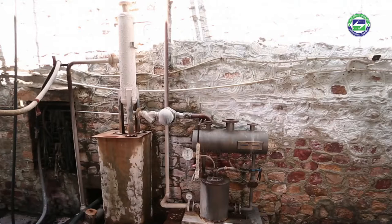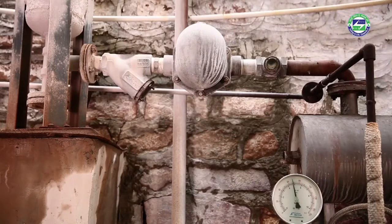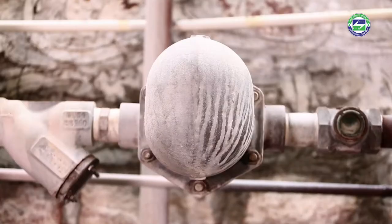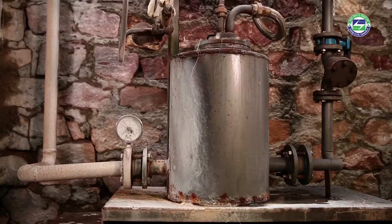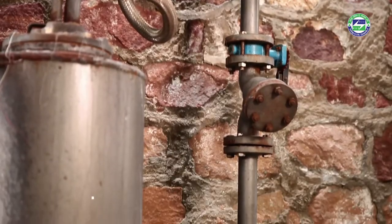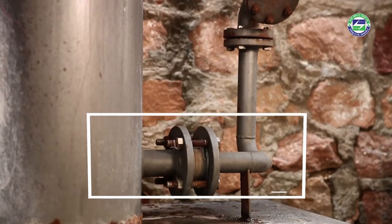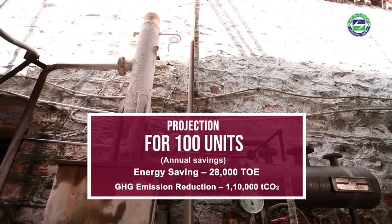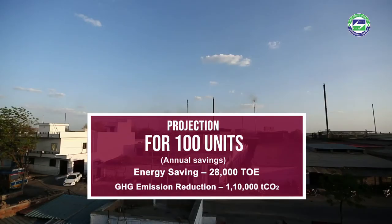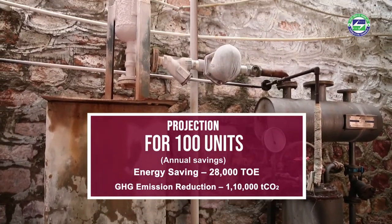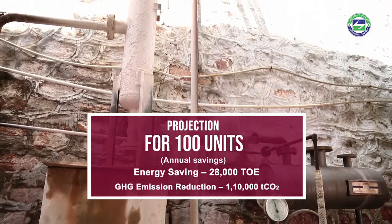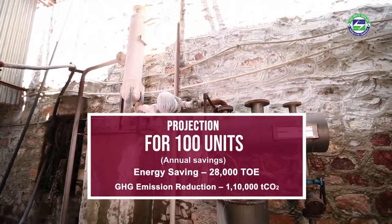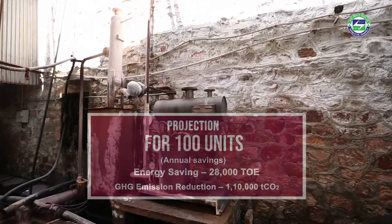The installation requires an investment of rupees fourteen to sixteen lakhs, which can be recovered within one year. The performance of the system depends on the performance of the steam traps, which should be able to trap live steam and separate steam from condensate. The system can be implemented in all process industries using steam for indirect heating. If implemented in one hundred units, this technology can save twenty-eight thousand tons of oil equivalent of energy per annum and one lakh ten thousand tons of CO₂ per annum.